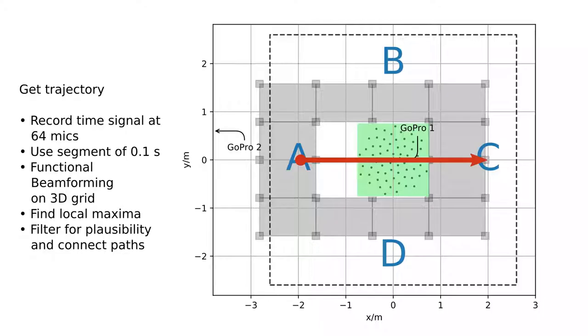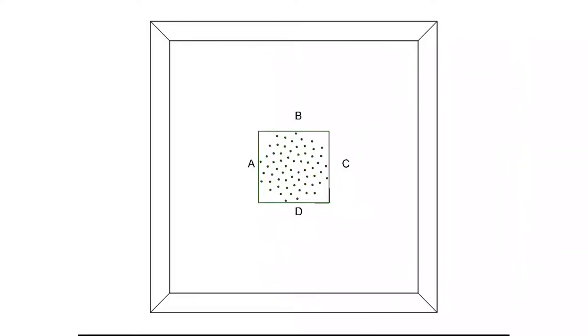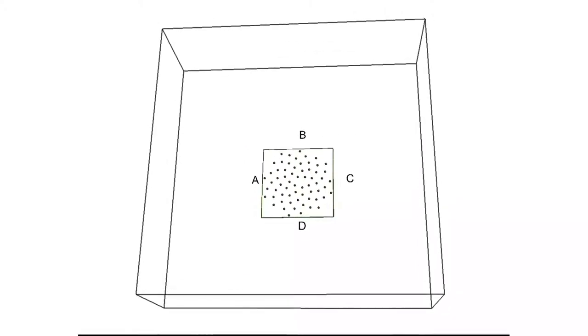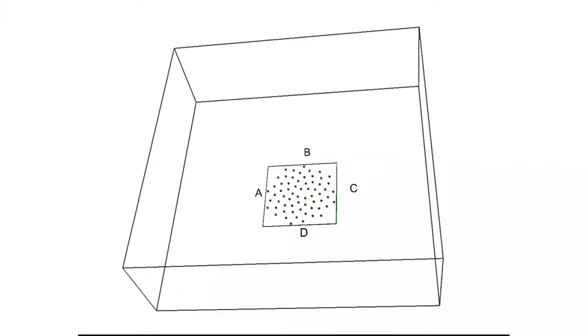Just a few words about the beamforming here. I am not going to go into the details but basically we can look at a point in space and see how much acoustic energy is emitted towards us from that point. We do this not only for one point but a whole three-dimensional area which is marked by the dotted lines here. And in our case we observe a box of 5.2 by 5.2 by 1.7 meters with evenly distributed points of 5 centimeters distance each.